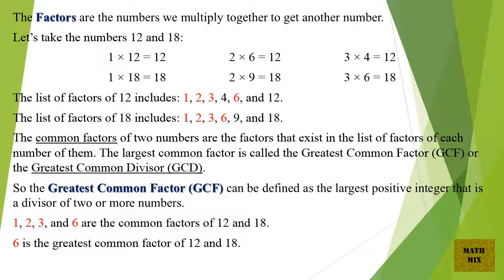So the greatest common factor, GCF, can be defined as the largest positive integer that is a divisor of two or more numbers. 1, 2, 3, and 6 are the common factors of 12 and 18. 6 is the greatest common factor of 12 and 18.